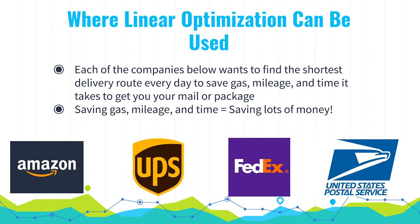You might be wondering where linear optimization can be used. Companies like Amazon, UPS, FedEx, and USPS want to find the shortest delivery route every day to save gas, mileage, and time it takes to get your mail or package. And saving gas, mileage, and time equals saving lots of money.